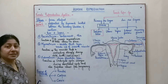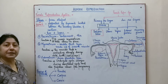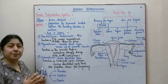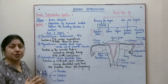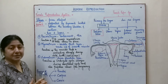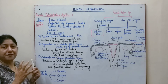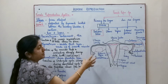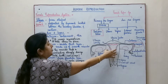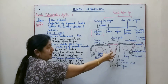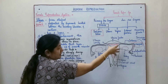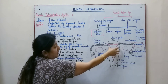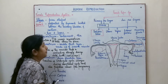The uterus is supported by ligaments which help keep it in a fixed position. These ligaments are present between the urinary bladder and the rectum, and they hold the uterus in place.